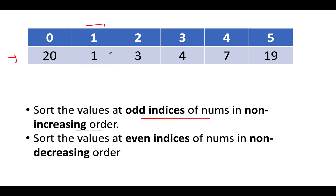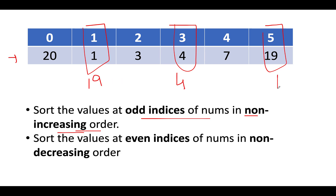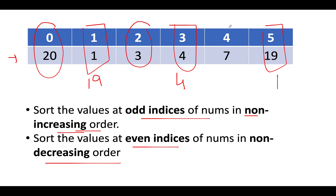Let's identify all the values at odd indexes: 1, 4, and 19. We need to rearrange them in non-increasing order, meaning decreasing. So the updated odd-index values should be 19, 4, and 1. Similarly, we need to sort all values at even indexes in non-decreasing order — non-decreasing means increasing. The values at even indexes are 20, 3, and 7, which sorted in increasing fashion gives us 3, 7, 20. So this is the resultant array we need to return.